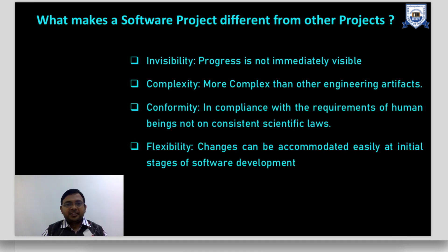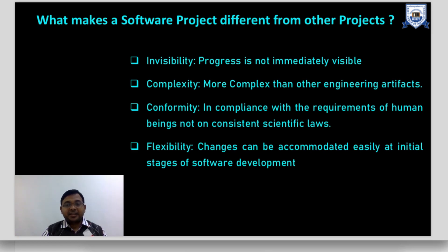Coming to complexity — software is more complex than other engineering disciplines because software is generally a human-intensive labor job. It is based on intelligence; we write creations of the mind in the form of high-level programming languages. Conformity and compliance are with the requirements of human beings, not with consistent scientific laws. The project is developed according to human requirements, not on the basis of fixed natural or scientific laws.